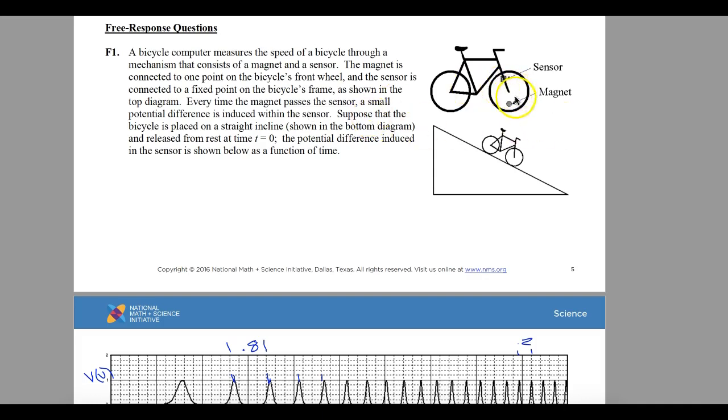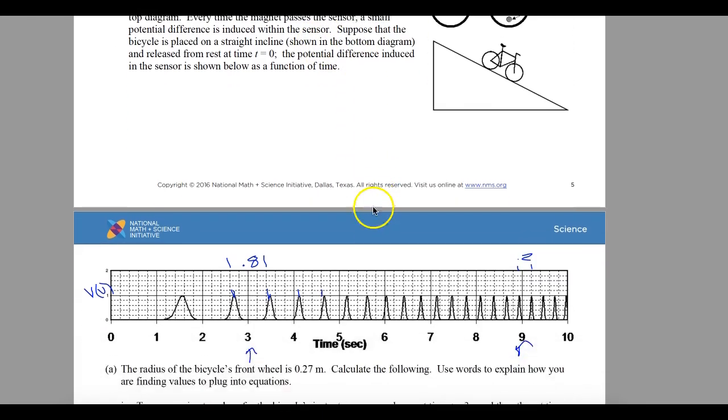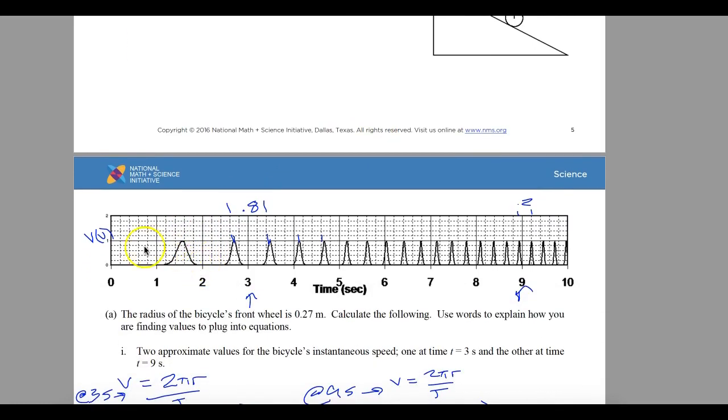You have a bicycle computer and it is attached to a sensor, and then you've got a magnet here. Every time this wheel turns, that magnet goes by the sensor and records the amount of time it takes for that to go. In the computer, we've also said how far the radius is here too.